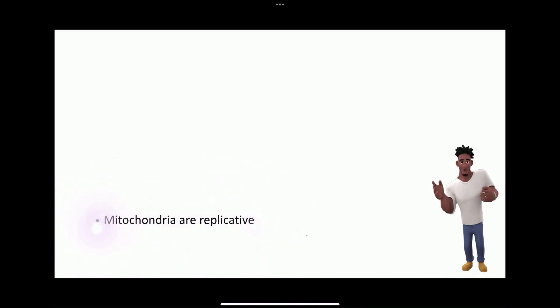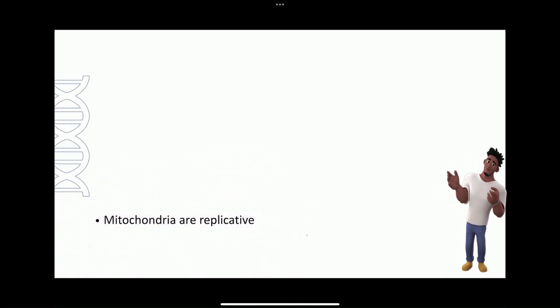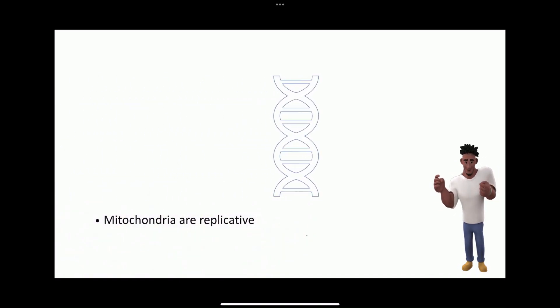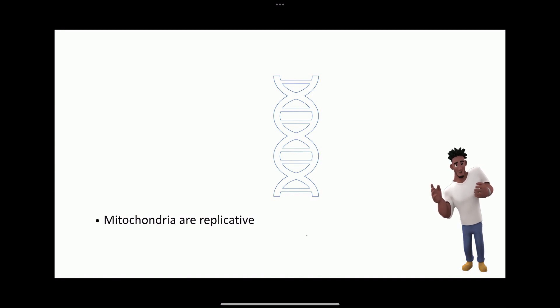Mitochondria are self-replicative, which means that one mitochondrion can form a second one, a third one, and so on.